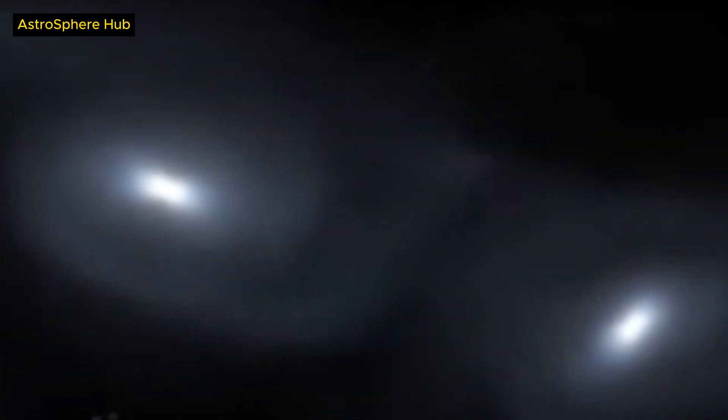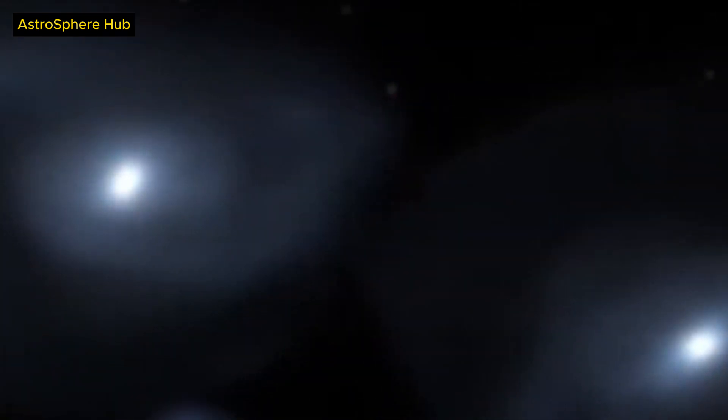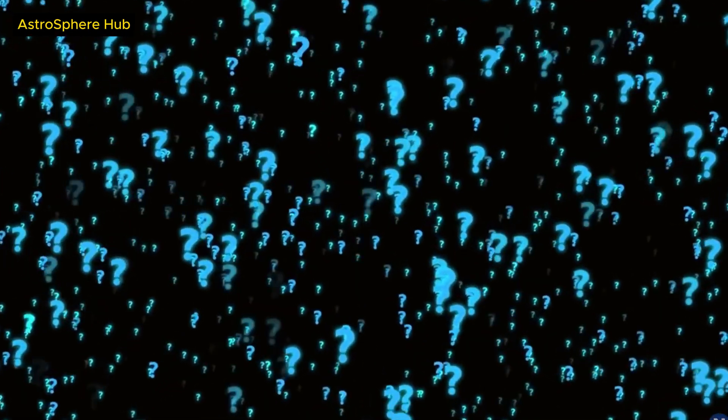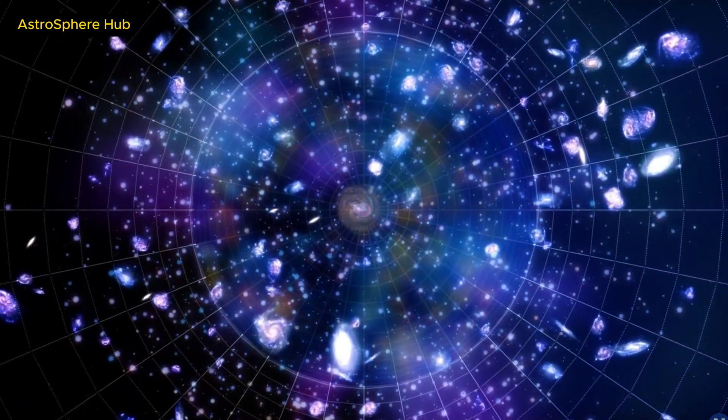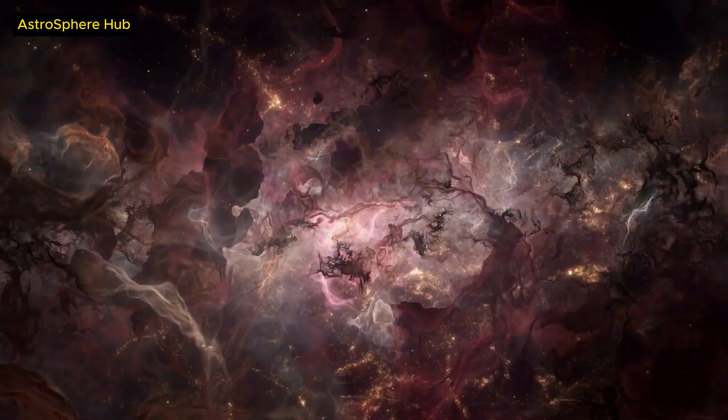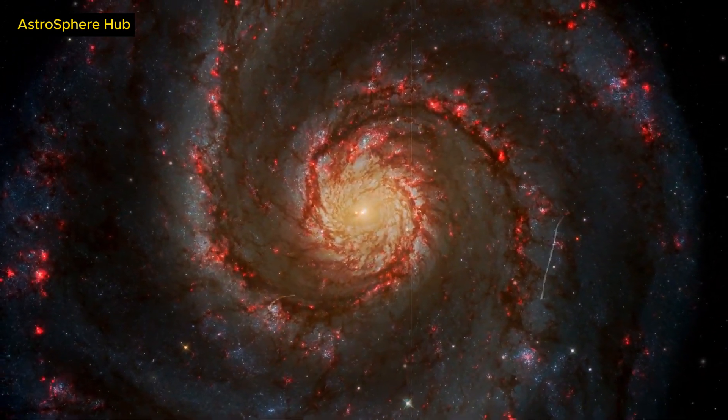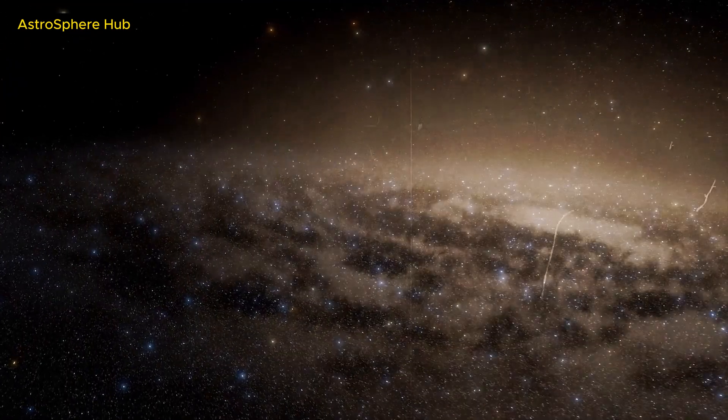The Firefly Sparkle Galaxy is a very distant and faint galaxy that was detected by James Webb using a technique called gravitational lensing, which is a phenomenon where the gravity of a massive object, such as a cluster of galaxies, bends the light of a background object, such as a galaxy, and magnifies it.